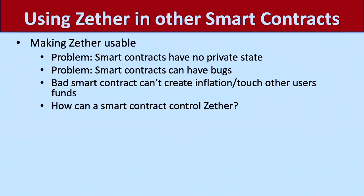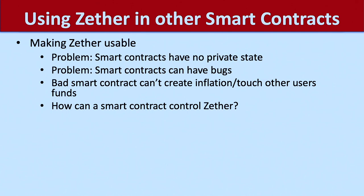We don't want to trust that a smart contract will never send a false amount. We want Zether to be modular and not depend on all the other smart contracts. These smart contracts could be malicious, and we have to prevent whatever malicious smart contract from sending evil transactions.